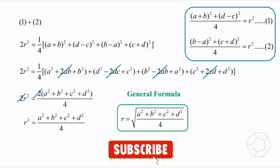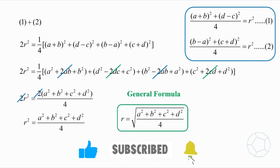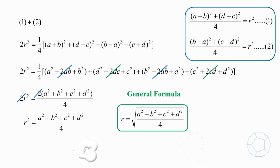Taking the square root, we get the general formula: R is equal to the square root of (a² + b² + c² + d²) all over 4. This is called the quadratic mean of a, b, c, d. Now, you can see that the assumptions are not important because the formula is symmetrical about a, b, c, and d.